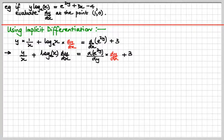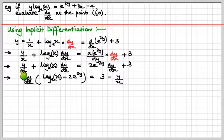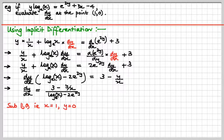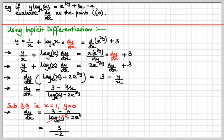Now we rearrange: move the non-dy/dx terms to one side, collect and factor out dy/dx as a common factor, then make dy/dx the subject. Substituting x is 1 and y is 0: the y term disappears, log of 1 is 0 so that term disappears too, and e to the 0 is 1, so it becomes minus 2. dy/dx equals minus 2. That's the answer, and you're a star!